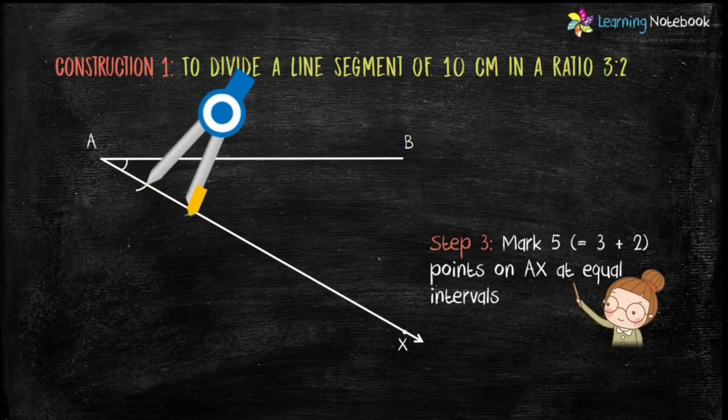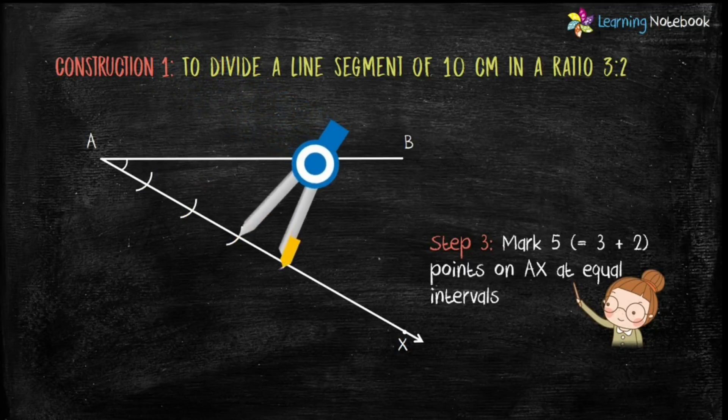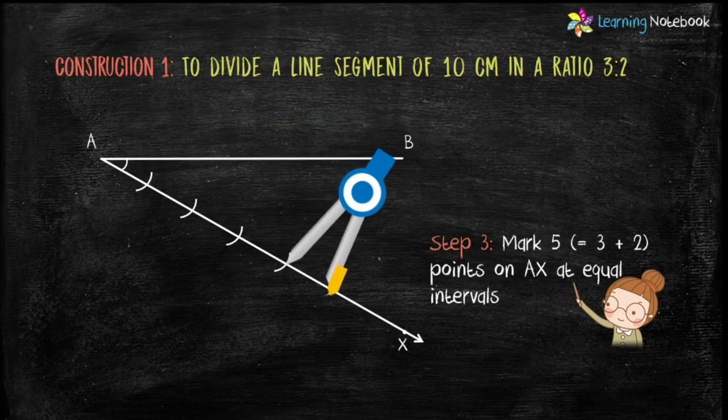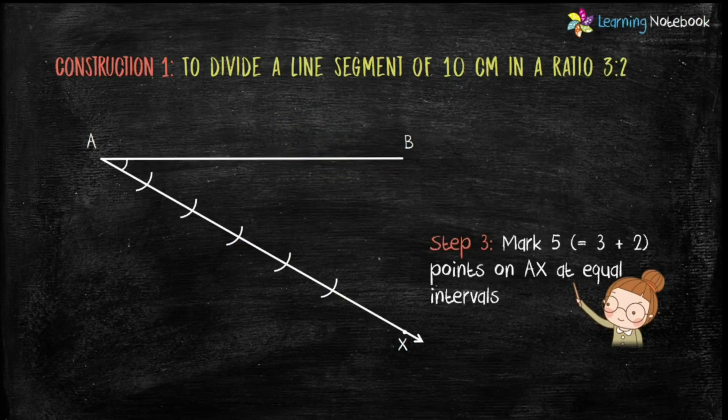Step 3: Mark 5 points on AX at equal intervals. Why 5 points? Because the given ratio is 3:2, and 3 + 2 = 5. So we have 5 points: A₁, A₂, A₃, A₄, and A₅ such that AA₁ = A₁A₂ = A₂A₃ = A₃A₄ = A₄A₅.